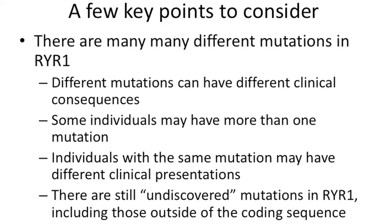There are many, many different mutations in RYR1 that can cause myopathy, and these mutations likely have different clinical consequences. Some individuals have more than one RYR1 mutation, whereas others have only one. Some individuals have the same mutation but different clinical presentations — one person in a family may have mild symptoms while another has much more severe symptoms, yet everyone has the same mutation. This type of variability is very well recognized in RYR1. Importantly, some patients we suspect have RYR1 mutations have yet to have a mutation found — perhaps because they have something different, or because the mutation is in parts of the gene we haven't looked at yet.